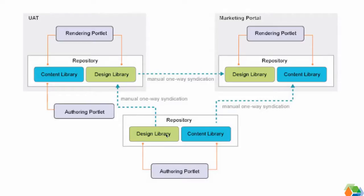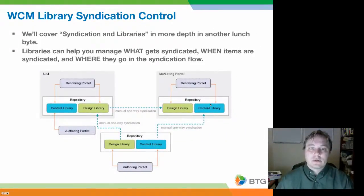The content library contains all the content items — the things that are created, published, and edited on a daily basis. By setting these up differently, you can say that content goes straight into the production environment. As soon as it's approved in its workflow and becomes a live item, it can be syndicated either manually or automatically to production. But if you have a policy where new sites and content assemblies must be UAT tested before going live, you can set the design library to go straight into the UAT environment where it can be tested safely. When it's ready, you can kick off a manual syndication of that library into the production environment. This shows how libraries give you control over what gets syndicated and where things go in the syndication flow.